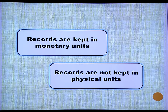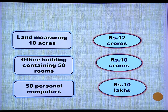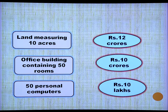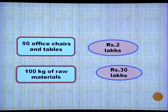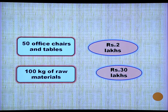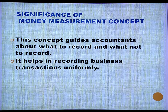Records are kept in monetary units, not physical units, according to the money measurement concept. For example, we do not say 'land measuring 10 acres' — we say 'land worth rupees 12 crores.' We do not say 'office building containing 50 rooms' — we record it as 'office building worth rupees 10 crores.' Similarly, computers worth rupees 10 lakh, office chairs and tables worth rupees 2 lakh, raw materials worth rupees 3 lakh. The money measurement concept guides accountants about what to record and what not to record.